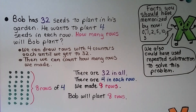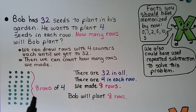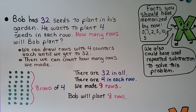With 4 in each row, we count the rows: 1, 2, 3, 4, 5, 6, 7, 8. There are 32 in all, 4 in each row, and we made 8 rows. So Bob will plant 8 rows.